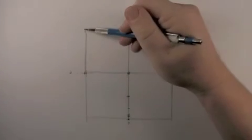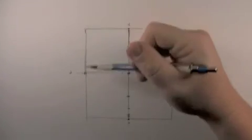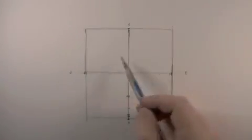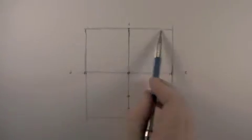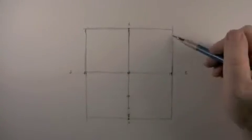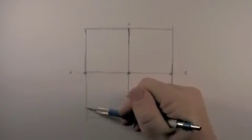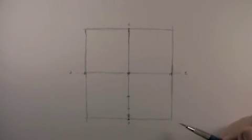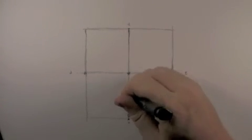Now that we have our center and have established the confines of our schematic, we're going to go ahead and begin to draw the skull. Let's erase these other points — they're less useful now and will just get in our way.